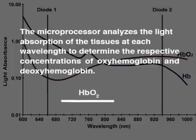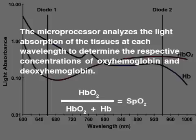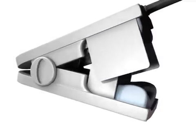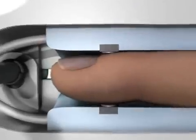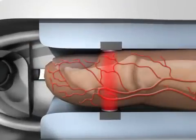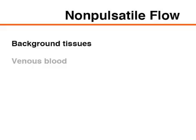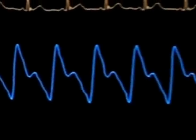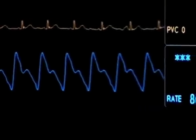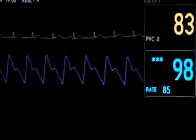The microprocessor divides the concentration of oxyhemoglobin by the sum of the concentration of oxy and deoxyhemoglobin to determine the arterial blood oxygen saturation, SpO2. The probe is positioned so that the photodetector and light-emitting diodes face each other, with layers of tissue between them. The photodiodes turn on and off several hundred times per second to record the light absorption during pulsatile and non-pulsatile flow. During pulsatile flow, the light absorption of arterial blood, background tissues, and venous blood is detected. During non-pulsatile flow, only the light absorption of background tissues and venous blood is detected. The microprocessing unit compares the light absorption during pulsatile and non-pulsatile flow to isolate the light absorption of arterial blood and thus determine the arterial blood oxygen saturation.